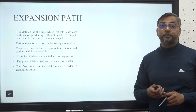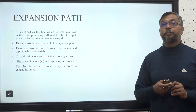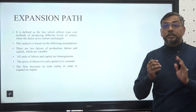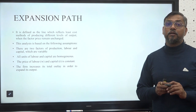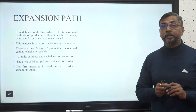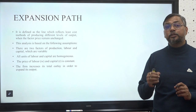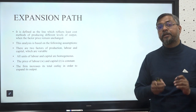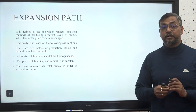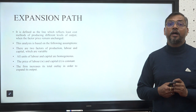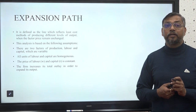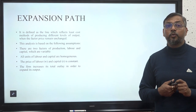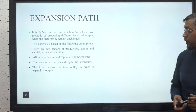There are different assumptions taken into consideration while drawing an expansion path. First, the factors of production must be two — that is, labor and capital. Second, the units of labor and capital must be homogeneous, because in non-homogeneous situations we won't be able to see an expansion path depicting the properties of an isocline. Third, the prices of labor and capital are constant. Fourth, the firm will increase its total outlay in order to expand its output.